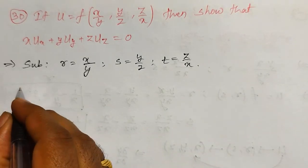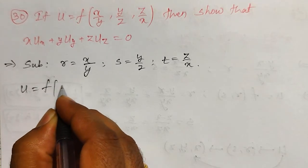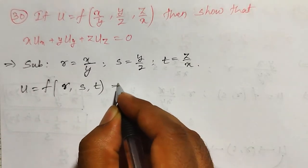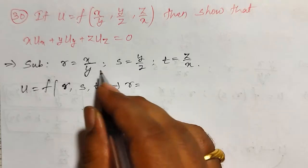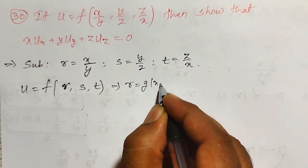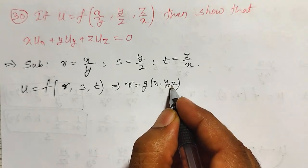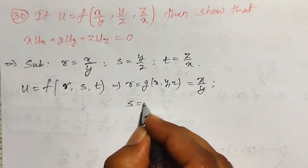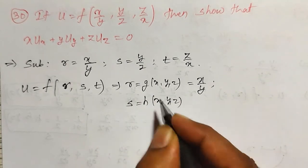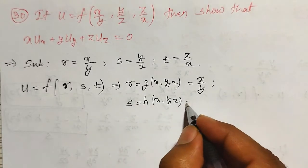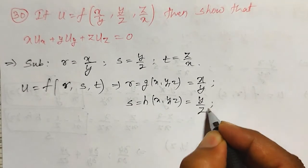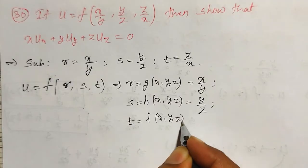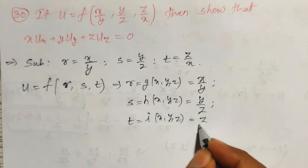How it works? Here U I can write as f of r, s and t. And r I can write as x/y, as some function of x, y, z. Therefore r is equal to x/y. Like that, s is again some function of x, y, z — there is no x term, but I will include it and write it as y/z.